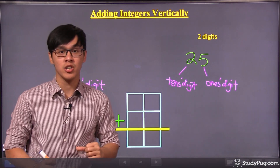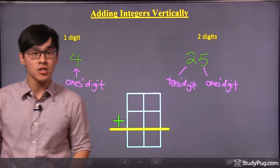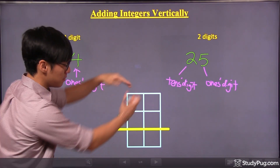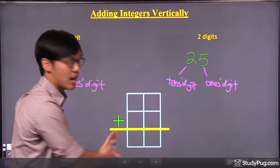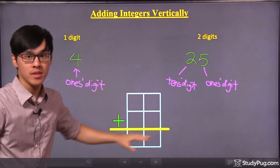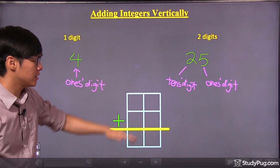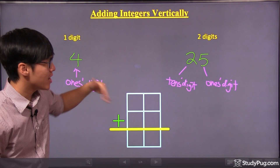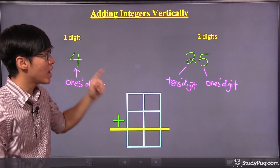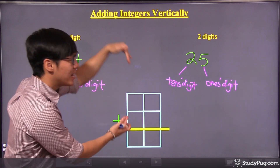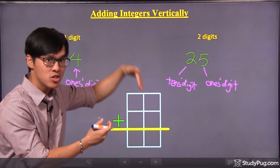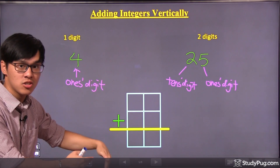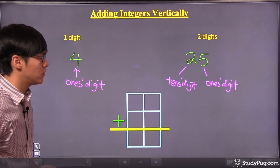Why do we need to know these terminologies? Because when we are adding the integers vertically, this is the layout you should be using. When you're adding them, you will have to line up the digits together — the ones digits together, the tens digits together, and so on and so forth.